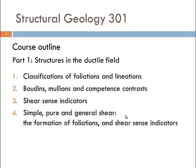In this first part, structures in the ductile field, we have four different sections. The first is a classification section — we are going to look at types of foliations and lineations and to some extent how they form. We then look at more specific structures: boudins, mullions, and the competence contrasts responsible for forming these structures.